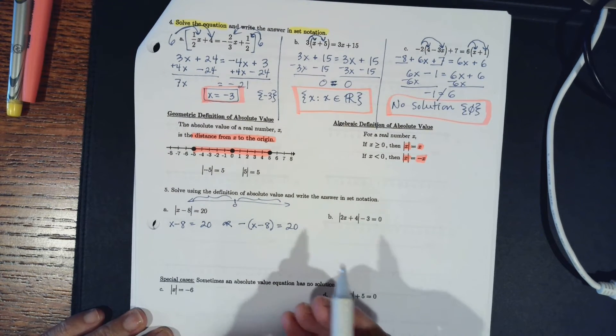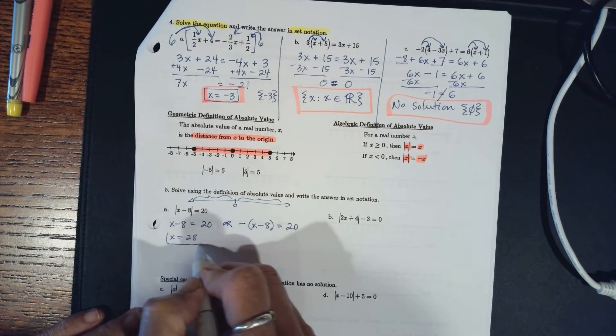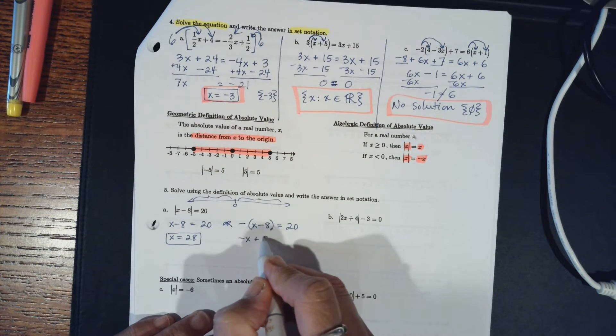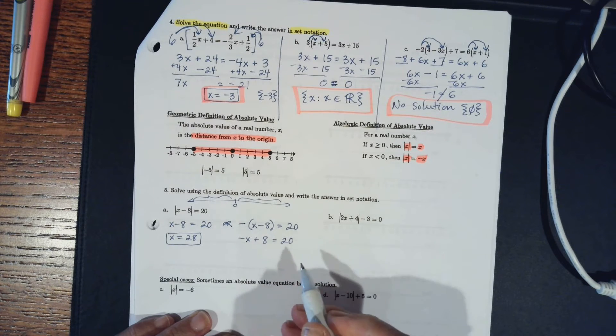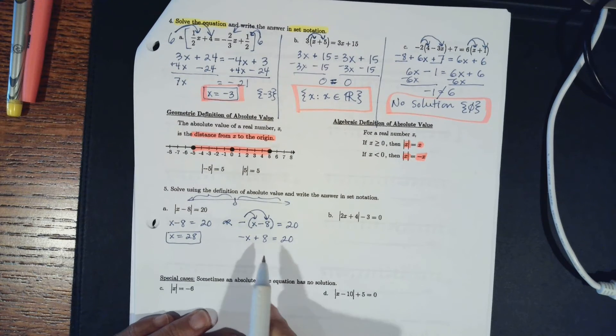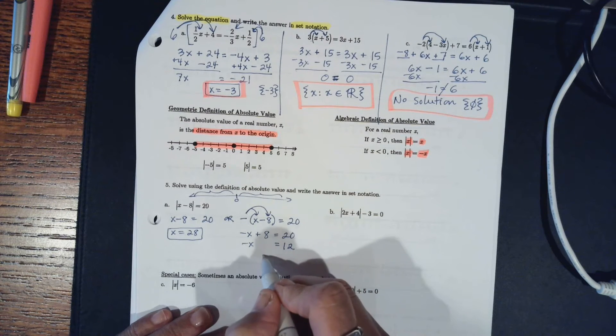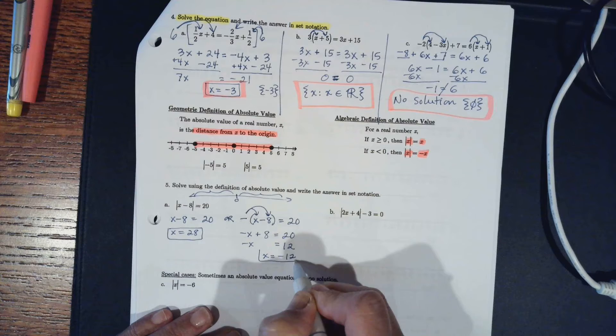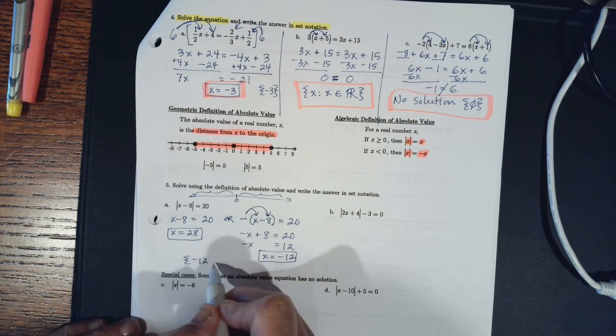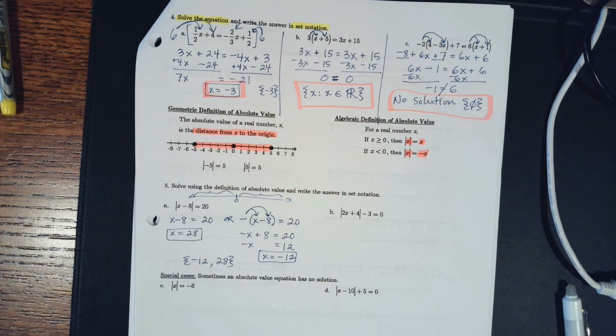Now then you solve each equation. So I'm going to add 8 to both sides and here I get x equals 28. And here I have to distribute the negative, so I get negative x plus 8 equals 20. I'm going to take away 8 from both sides, and the possibility that I get is x equals negative 12. So in set notation what you write is negative 12 comma and 28.